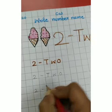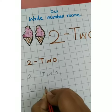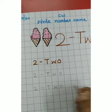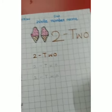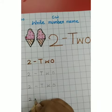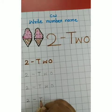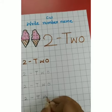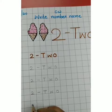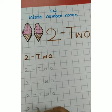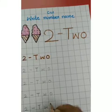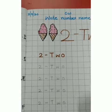2 dash capital T, small w, and o. T-W-O, 2. The number name of 2 is T-W-O, 2 — dash capital T, small w, and small o. T-W-O, 2. 2 dash capital T, small w, and small o. T-W-O, 2.